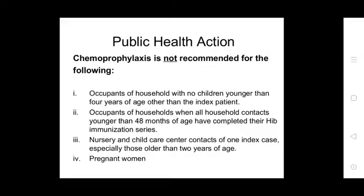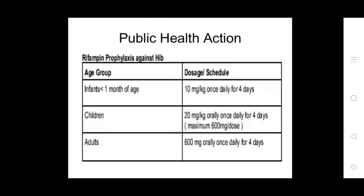Chemoprophylaxis is NOT recommended for: occupants of a household with no children younger than four years other than the index patient; household contacts aged 48 months or older who have completed their Hib immunization series; nursery and child care center contacts of the index case, especially those older than two years of age; and pregnant women.